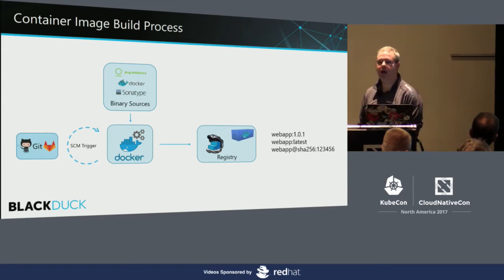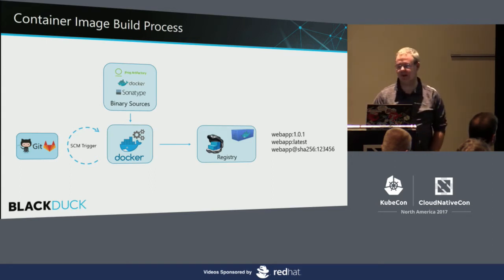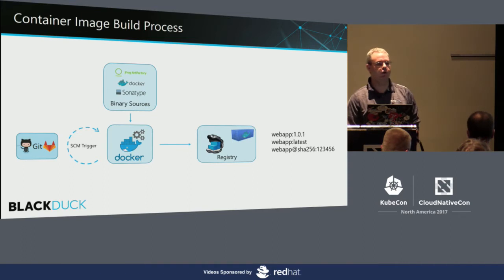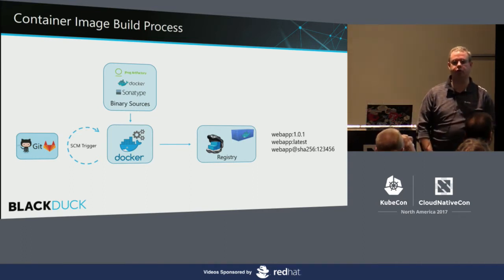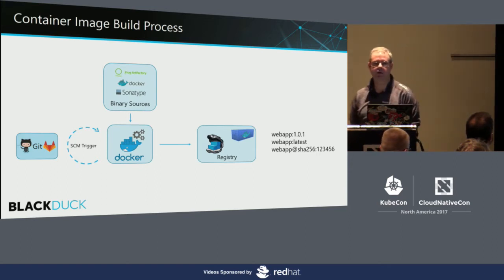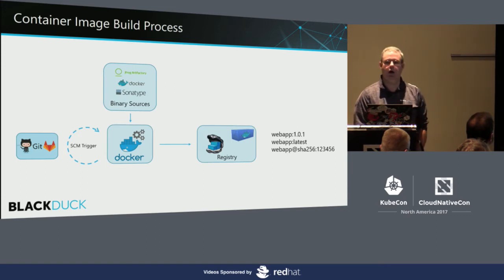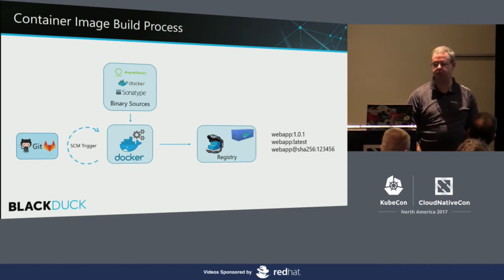It's going to have an implicit tag of 'latest' because that was the last thing pushed. It's also going to have what's known as a pull spec — a SHA-256 hash, shortened here to 123456. For practical purposes, these three monikers — the version tag, 'latest', and the SHA-256 pull spec — are how you can refer to this image that was just created. Depending on how you've grown up in the world, you may have some mix of these, and that last one might be something that's a little bit new to you.